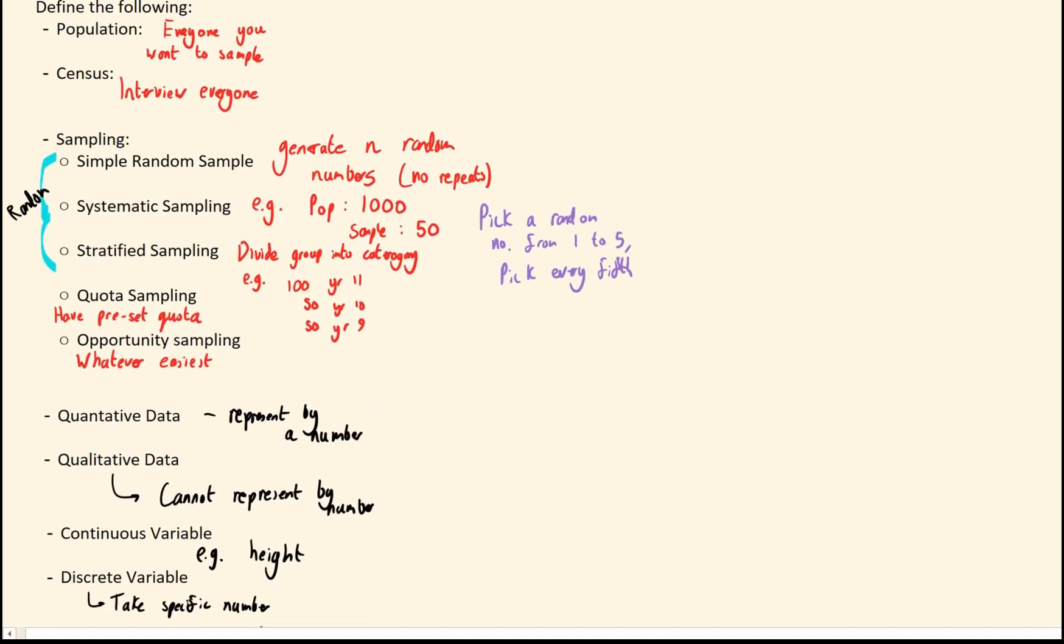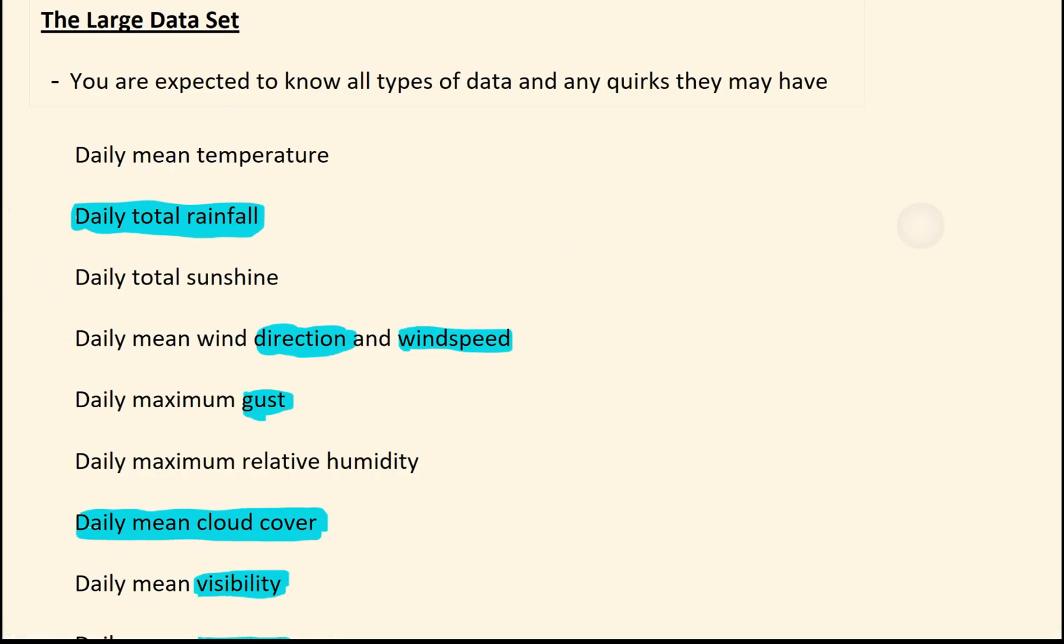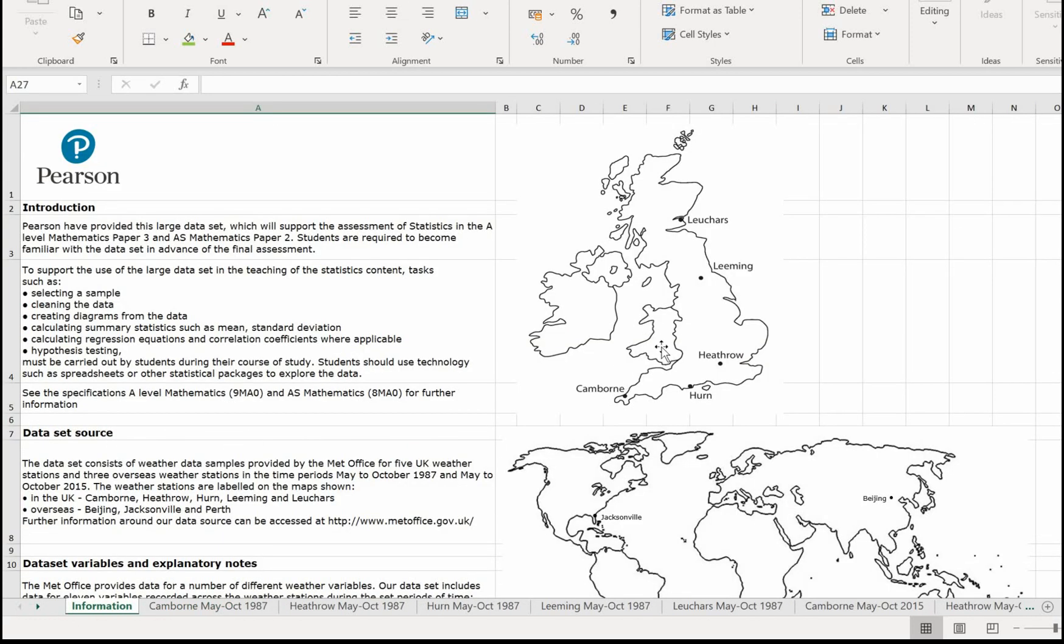That's a lot to take in and a lot to remember, but it is all stuff you are expected to know. Moving on. We have roughly the same kind of massive stuff to remember with the large dataset. So, first of all, what it is, the large dataset is basically a massive spreadsheet file that covers information, I think, from the 1980s up until 2015,